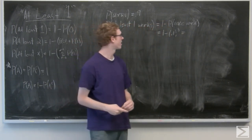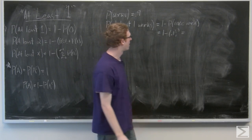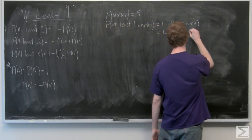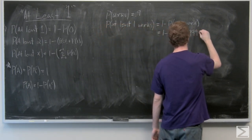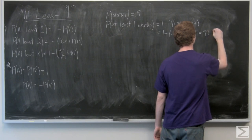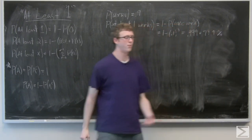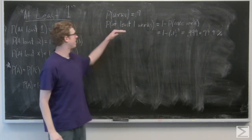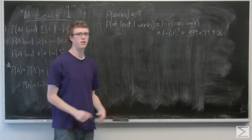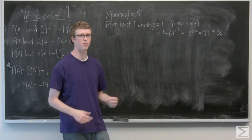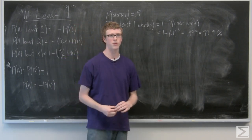Go ahead and plug this into your calculator and you're going to get 0.999, which is a 99.9 percent chance that at least one reactor works. So the scientists conclude that they have a pretty good chance of their chemical reactor working.